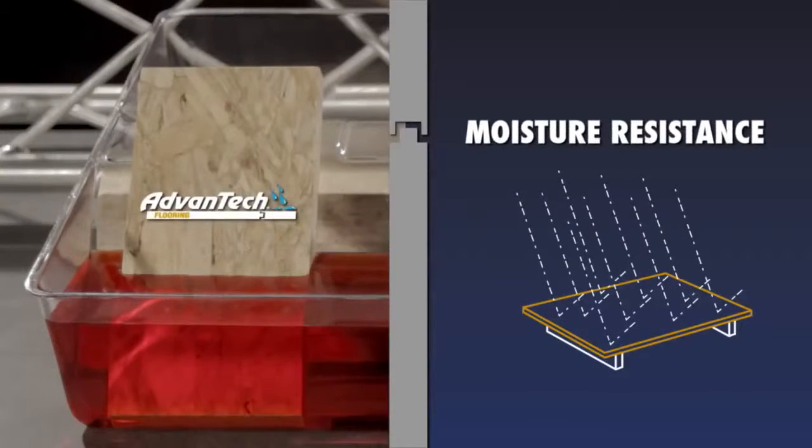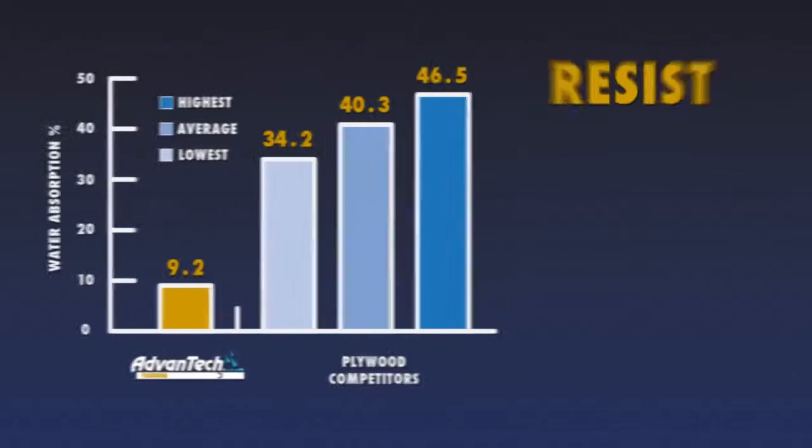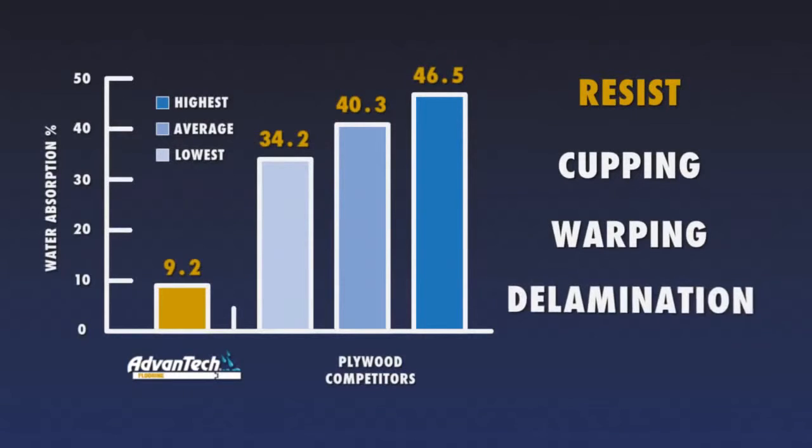Featuring moisture-resistant resins that protect the entire panel, even when cut, Advantek panels have one of the lowest water absorption rates and will resist cupping, warping, and delamination.